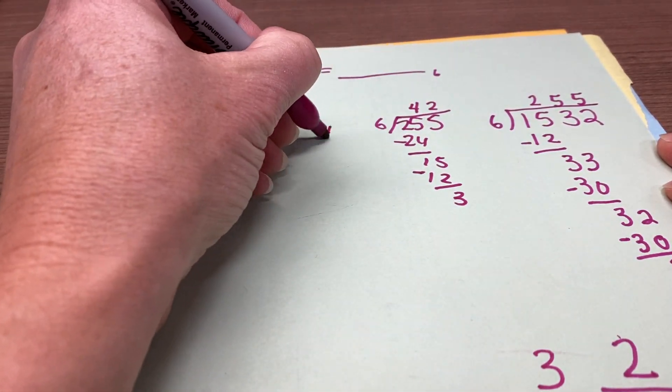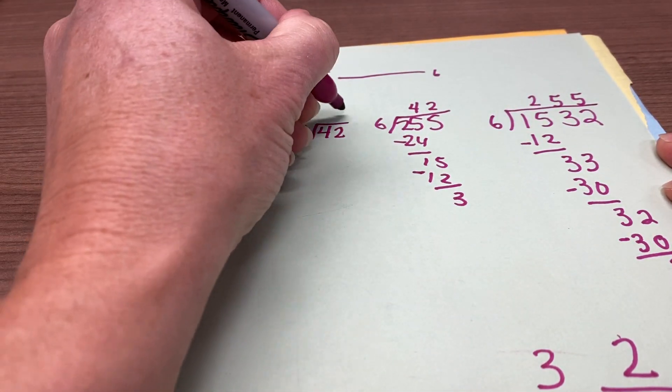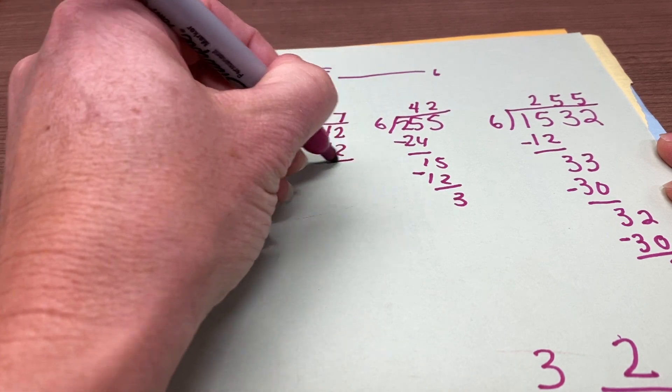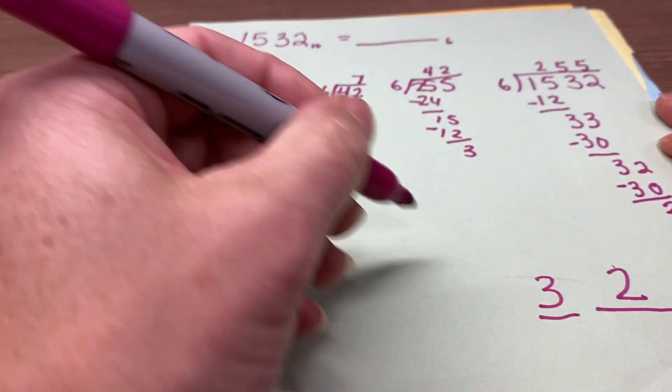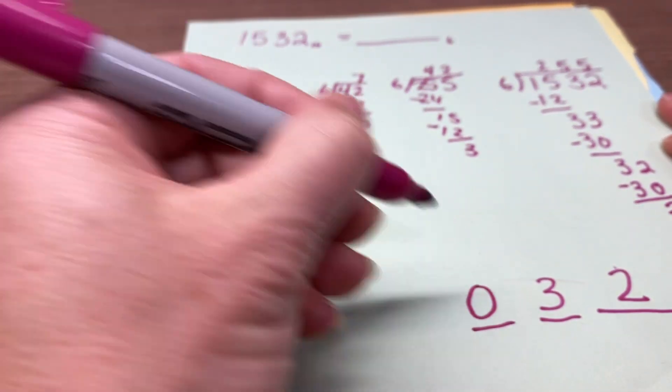Take the 42, divide by 6. We know that that's 7, no remainder. That goes in the next place value.